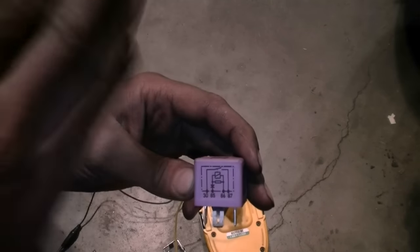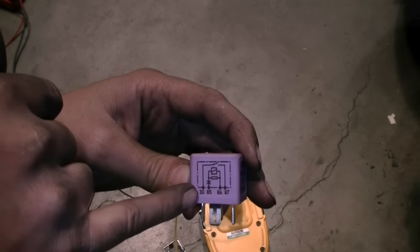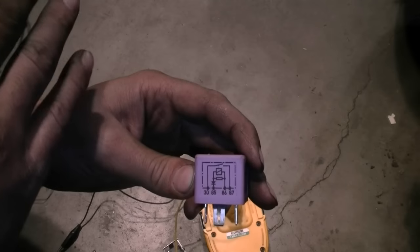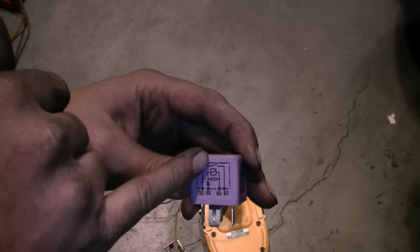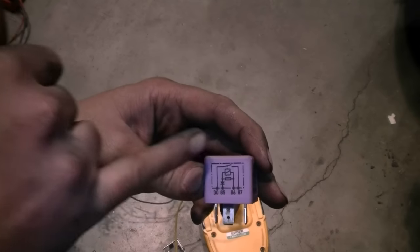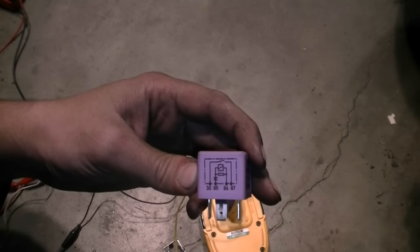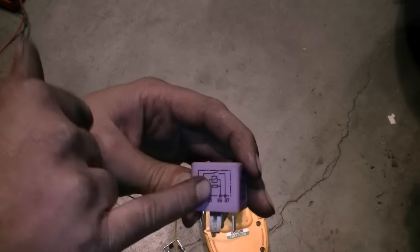Normally the circuit between 30 and 87 is not complete, but when this becomes energized it pulls that flapper, and it completes the circuit between 30 and 87.